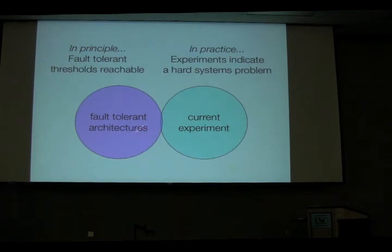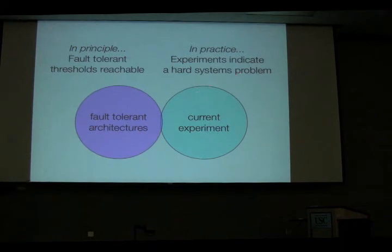The motivation here is to come up with some way of taking our knowledge of fault-tolerant architectures, which is quite developed, and connecting it to the range of experimental results. In my vision I have this Venn diagram of what we know about fault-tolerant architectures, what we can do in current experiment, and roughly where they overlap.